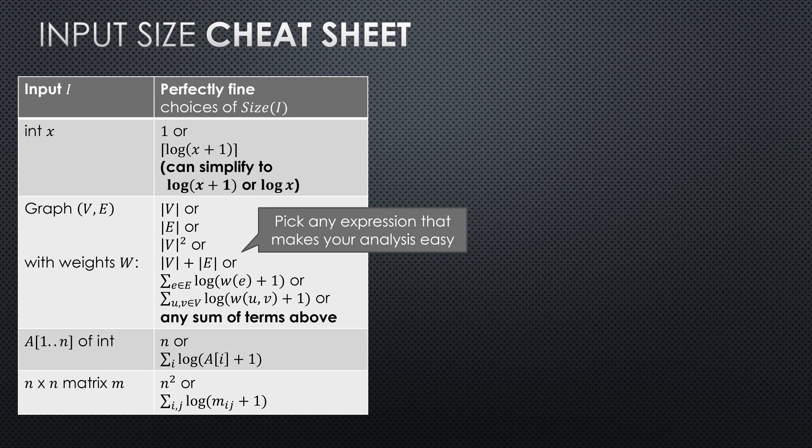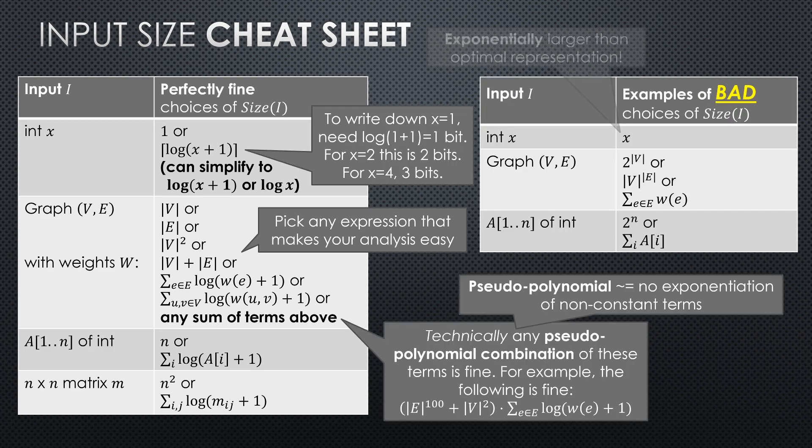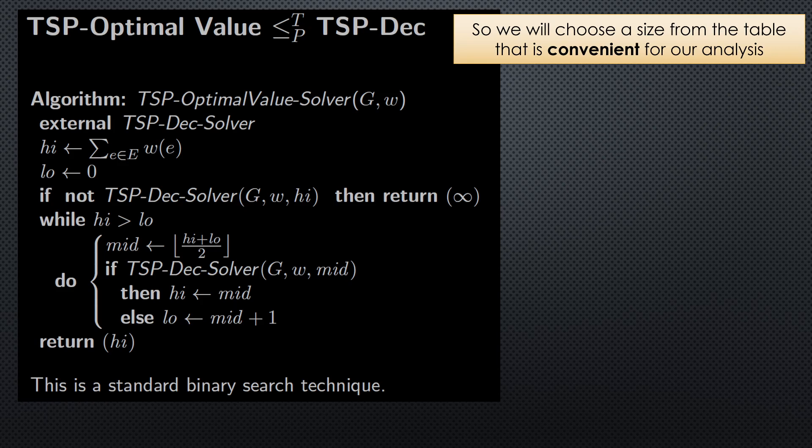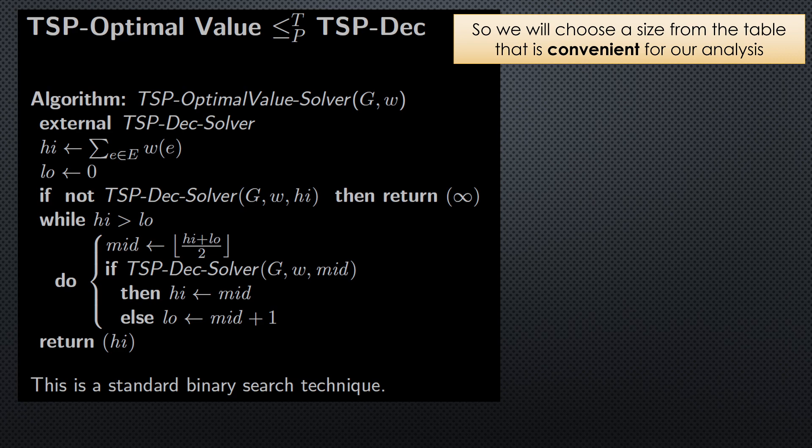Basically, the analysis showing that the reduction from TSP optimal value to TSP decision was a polynomial time reduction, I messed up one step and wanted to point out the solution and fix to the argument.